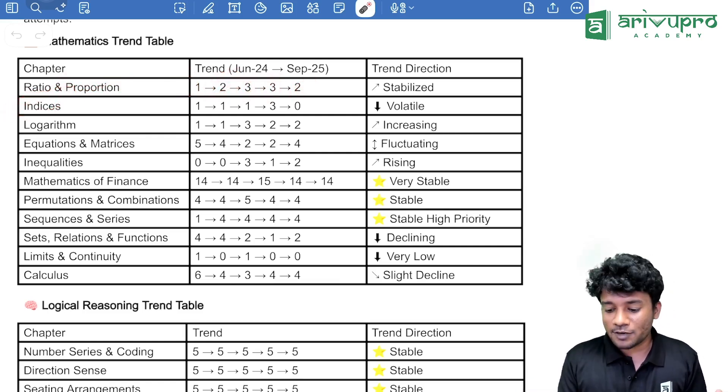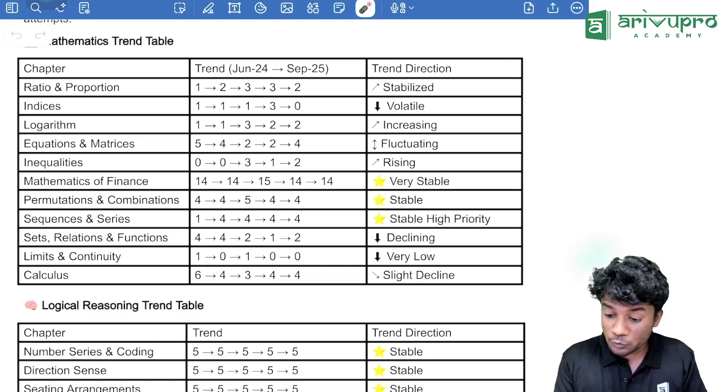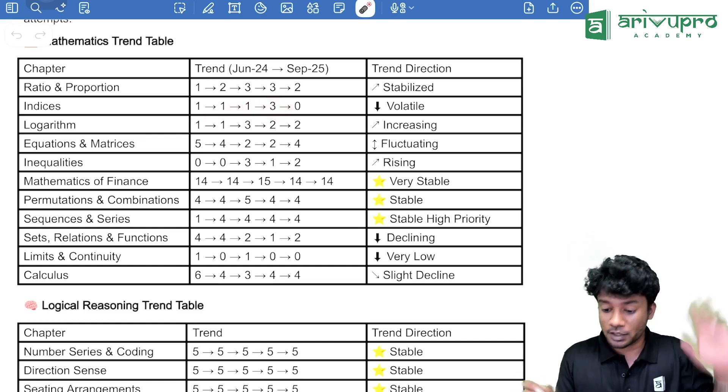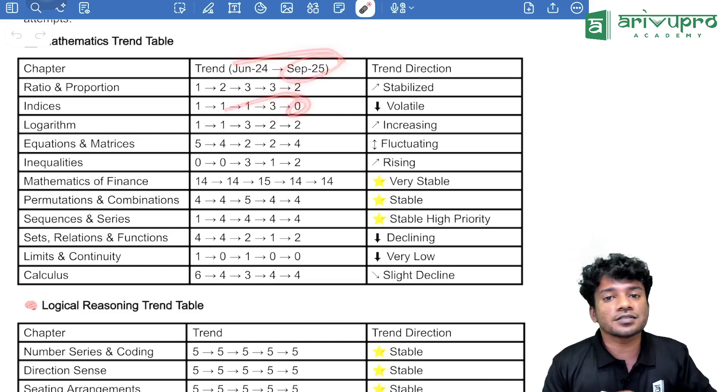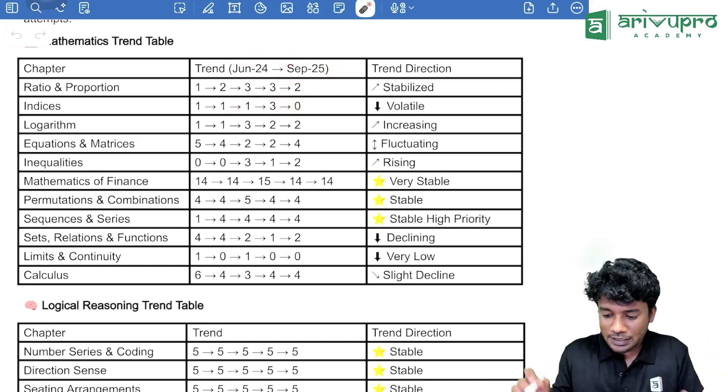Coming to the indices topic, it is like 1, 1, 1, 1, then there was a 3 mark question in the May attempt and 0 marks were asked in the September attempt. So, that is the trend.